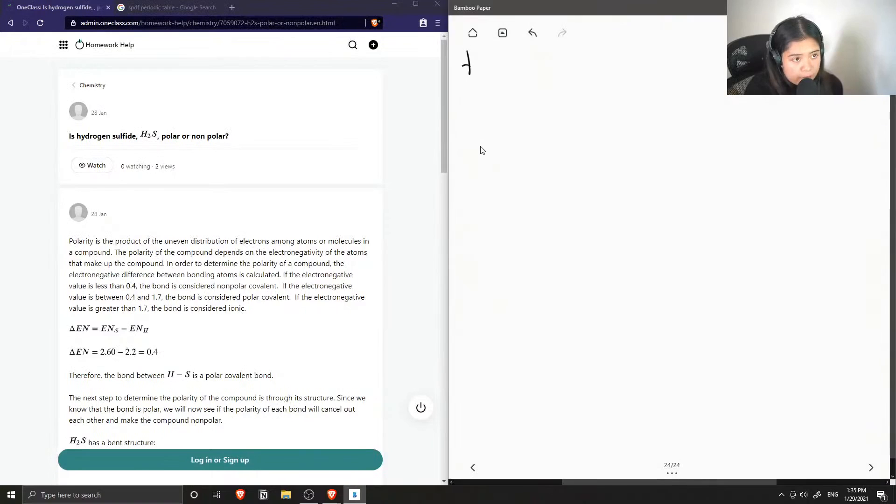Okay so number four is hydrogen sulfide H2S, polar or non-polar. To answer this question we first need to write the Lewis structure for hydrogen sulfide. So to do that we need to calculate the total number of valence electrons in this compound.